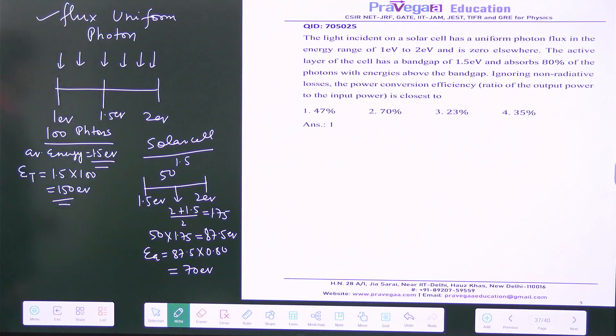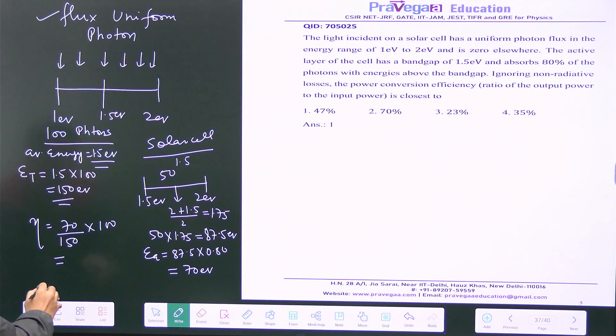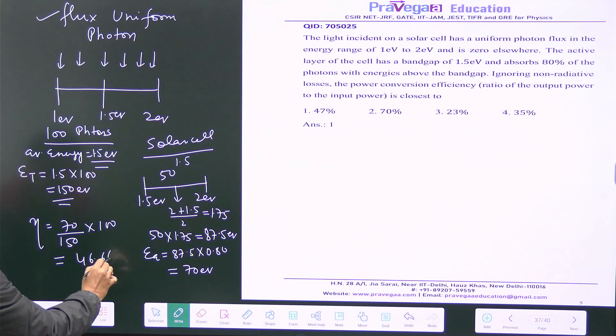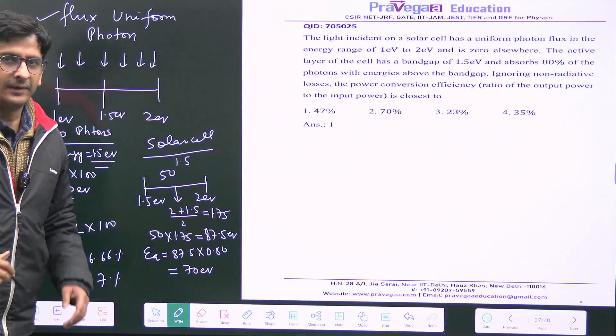So what is the efficiency? Efficiency is 70 by 150 into 100, and this you will get as 46.66 percent, which is roughly equal to 47 percent. So option A is correct. Okay, thank you.